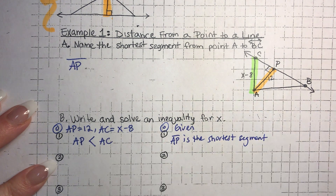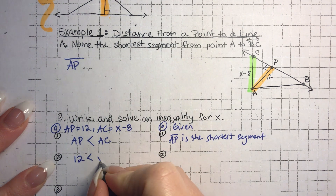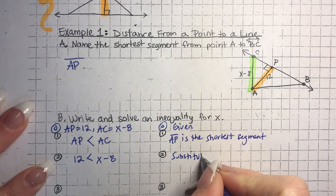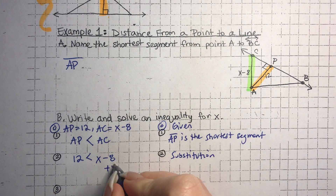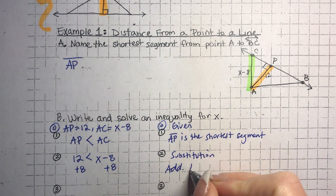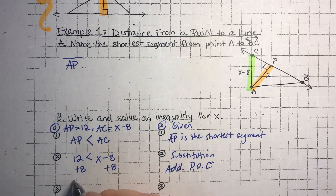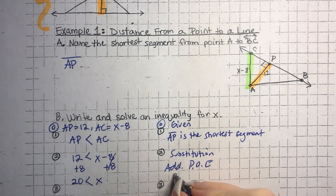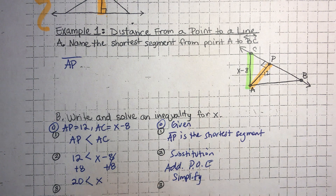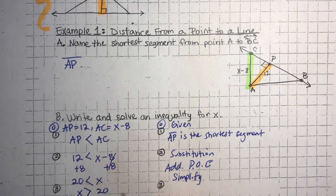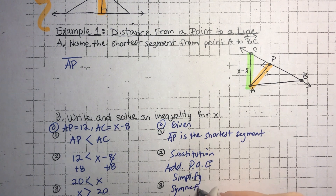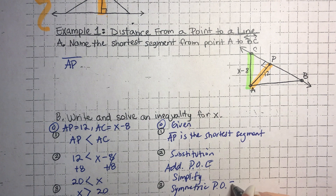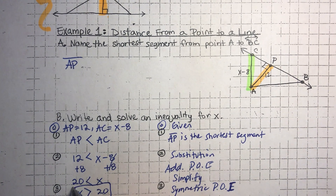Then we just substitute in the values. AP is 12, AC is x minus 8 — that's substitution. Then we solve for x. We add 8 to both sides using the addition property of equality, which gives us 20 is less than x. We switch sides, and the answer is x is greater than 20.